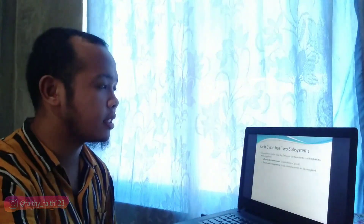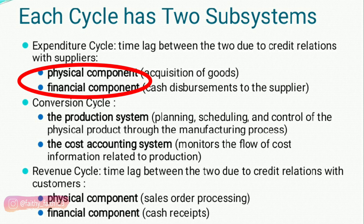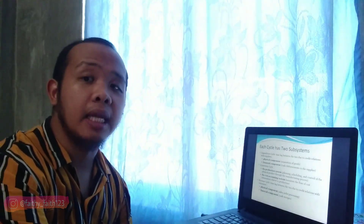Each cycle has two subsystems. In the expenditure cycle, there is a time lag between the two due to credit relations with suppliers. The two subsystems are physical and financial: physical acquisition of goods, and financial cash disbursement. Not all payments to suppliers are in cash, so there is a time lag. Usually, businesses pay on credit — typically 30 days or 15 days.